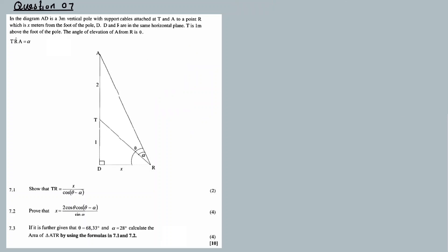Now, we are given a diagram with AD, which is a 3-meter vertical pole with support cables attached at T and A to a point R. TR and AR are cables, which is X meters from the foot of the pole. The foot of the pole to point R is X meters. D and R are in the same horizontal plane. T is 1 meter above the foot of the pole. The angle of elevation of A from R is theta, and the angle T-R makes is alpha.